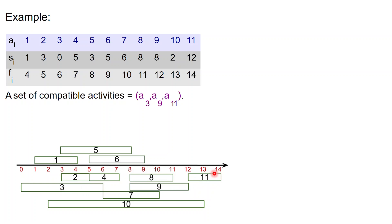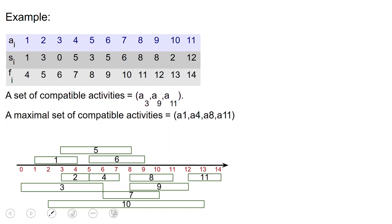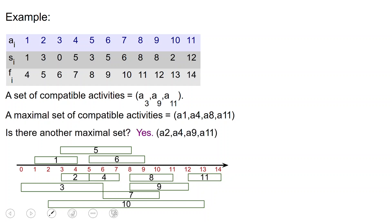That's not optimal because instead of three, you can do two and four. So for example, a maximal set of compatible activities would be activity one, then activity four, then eight, and then 11. And this is not the only maximal set — the one mentioned before is also maximal, which would be a₂, a₄, a₉, and a₁₁.